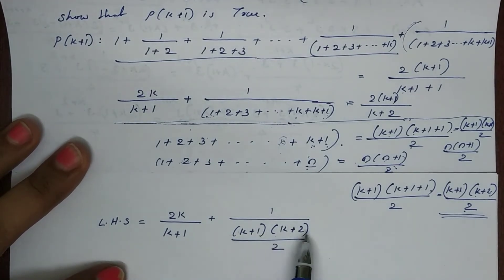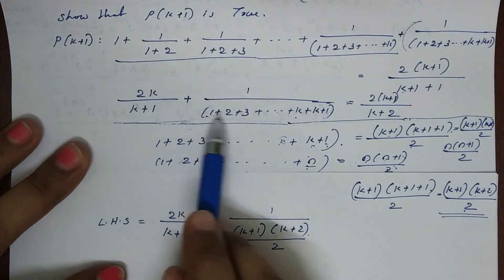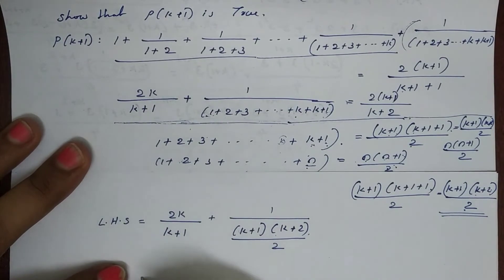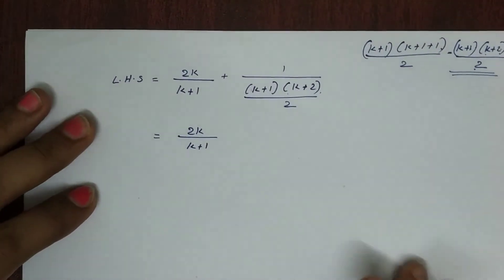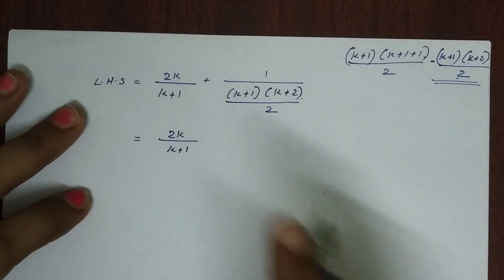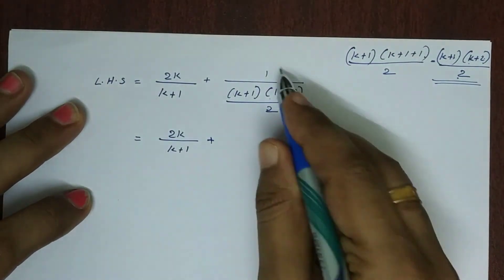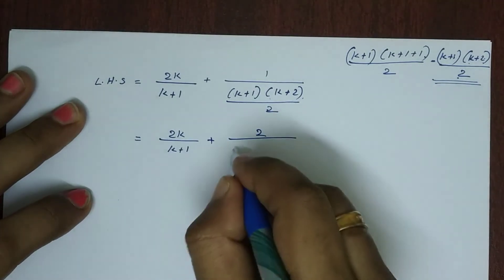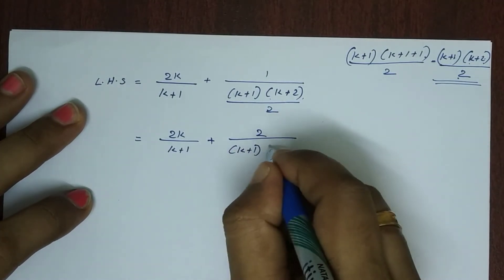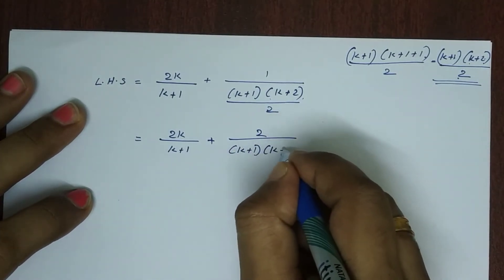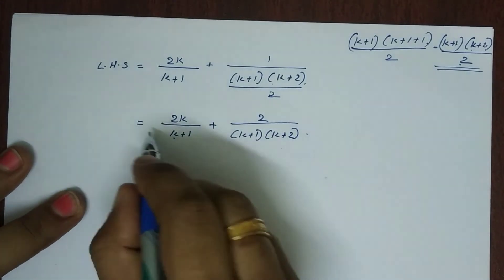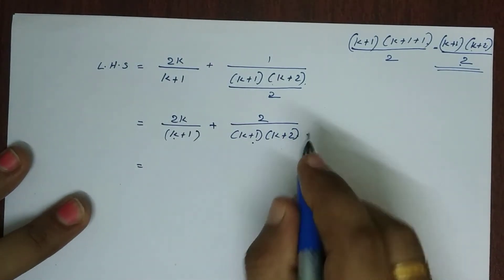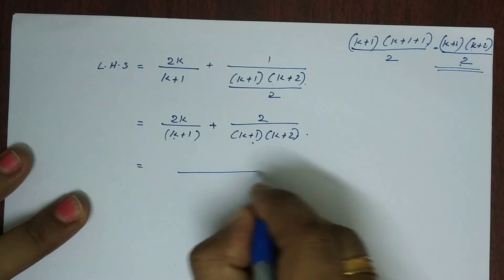Next step: we find a common denominator. The denominator is (k+1)(k+2). So we write 2k divided by (k+1) with the common denominator, giving 2k(k+2) divided by (k+1)(k+2), plus 2 divided by (k+1)(k+2).